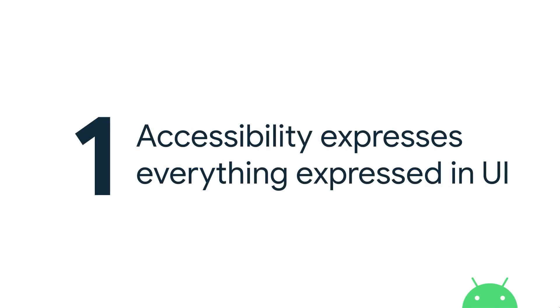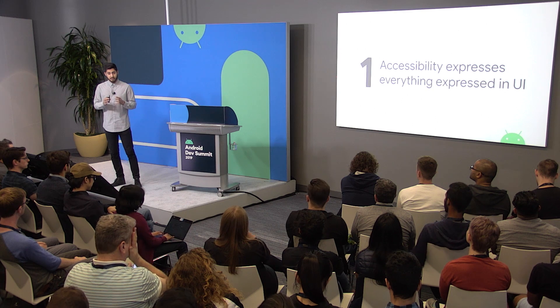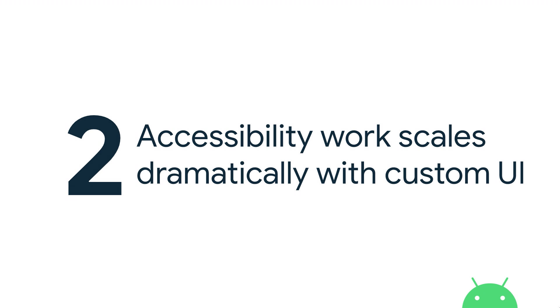The two big key takeaways: first, everything you express to your user, you must express to the accessibility service — if you don't, you're saying you don't want the accessibility user to consume or act on your UI in that way. Second, your accessibility work scales dramatically with the amount of custom UI you have. Try to use standard widgets as much as possible. If you really have to write custom widgets, be very honest about how much accessibility work it will take, scope it in advance, and dedicate those resources — otherwise you'll ship an inaccessible product and hurt your users pretty badly.